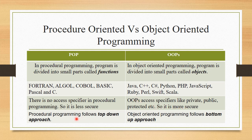Procedural programming follows a top-down approach — the whole program executes from the top of the program towards the bottom. Object oriented programming follows a bottom-up approach — the program starts executing from the bottom level upward. These are the basic differences between POP and OOPs. FORTRAN, ALGOL, COBOL, and BASIC are POP-based languages; Java and C++ are OOP-based languages.